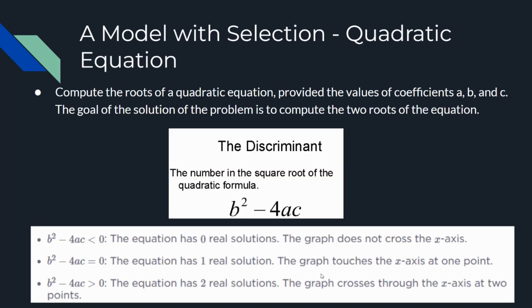The following problem involves developing a computational model that includes a quadratic equation, which is a simple mathematical model of a second-degree equation. The quadratic equation involves complex numbers. The goal of the solution is to compute the two roots of the equation. The given data are the values of the coefficients a, b, and c. Because this is a second-degree equation, the solution consists of two roots. The formula for the discriminant is b squared minus 4 multiplied by a multiplied by c. In mathematics, the discriminant is defined as a function of the coefficients of a polynomial equation whose value gives information about the roots of the polynomial.